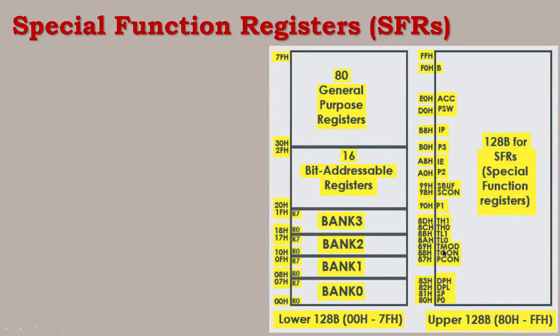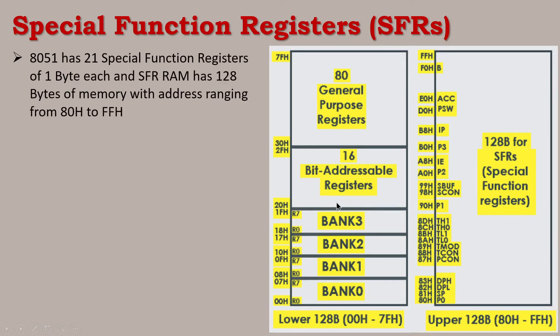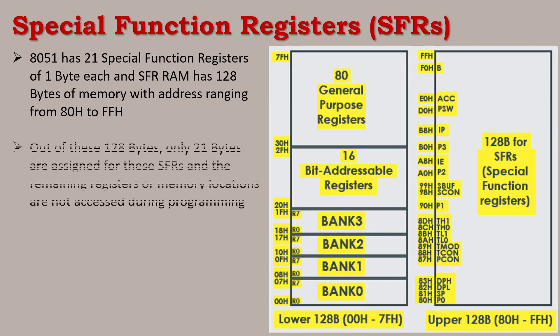These special function registers are called registers. They are used for microcontroller functions. What is this special function register? There are 128 bytes of memory location. In those 128 bytes, there are 21 special function registers. Each special function register uses 1 byte. So in 128 bytes, a maximum of 21 bytes of memory are used for special function registers.